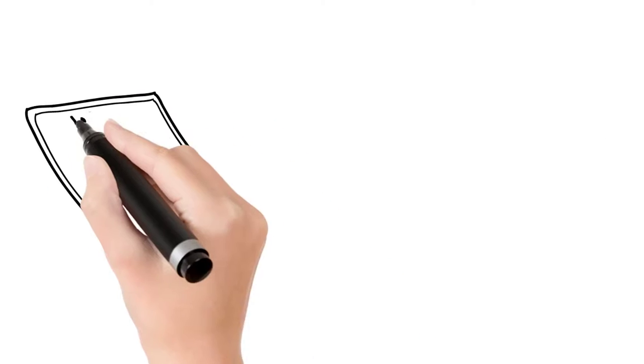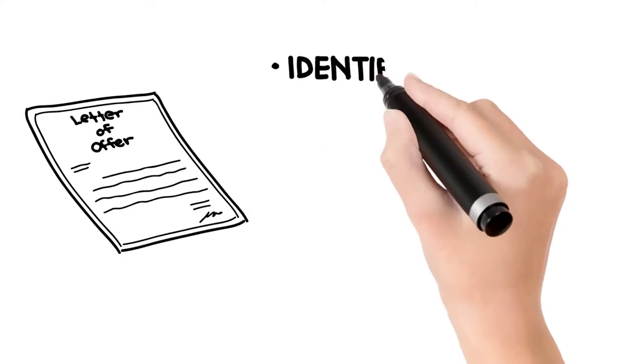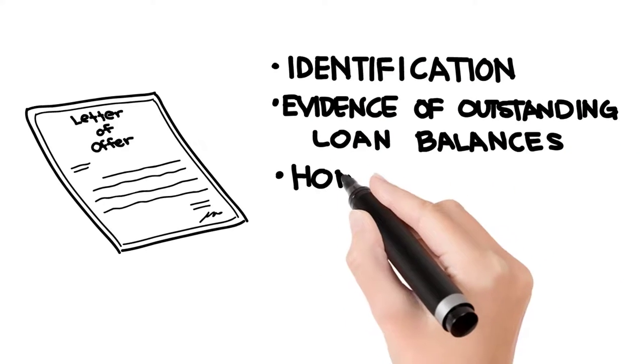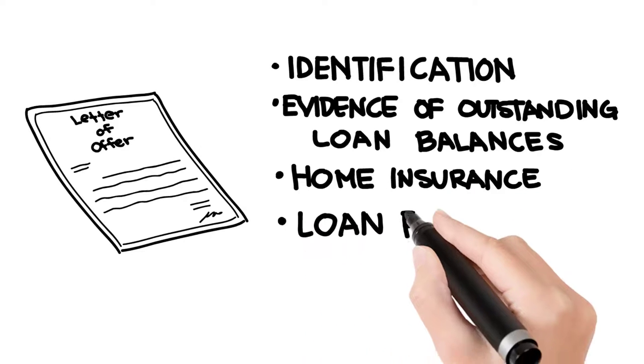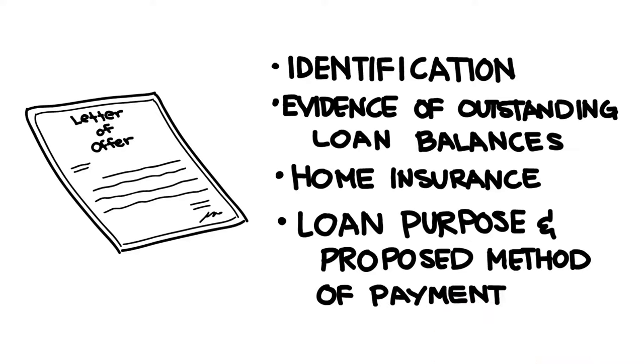Step 3. Interim finance will then provide its letter of offer and a short list of supporting documents. These typically include identification, evidence of outstanding loan balances, home insurance, a letter explaining the loan purpose and proposed method of repayment.